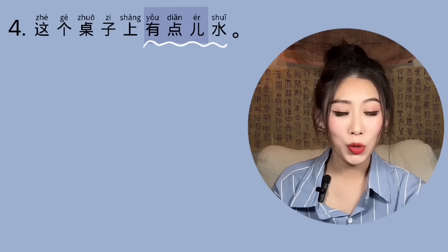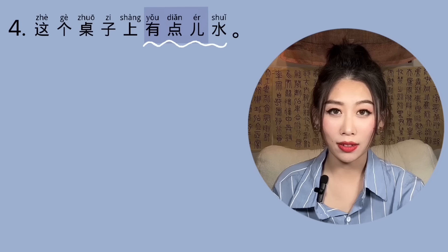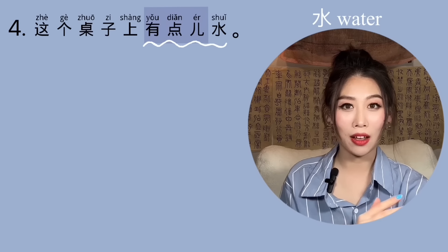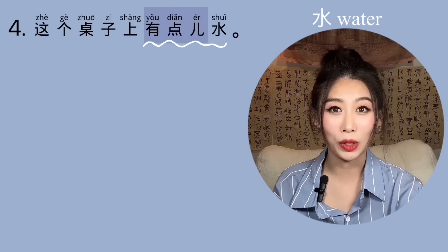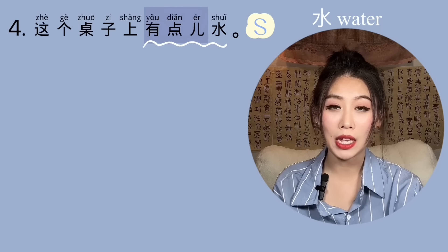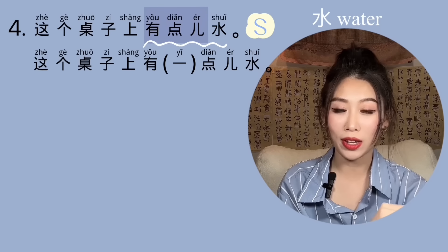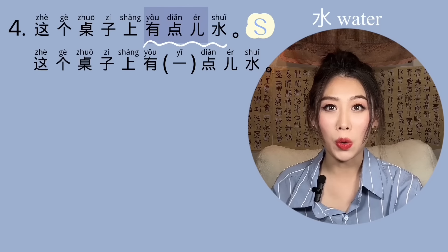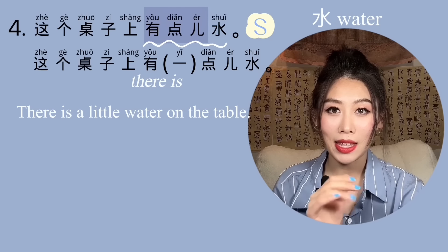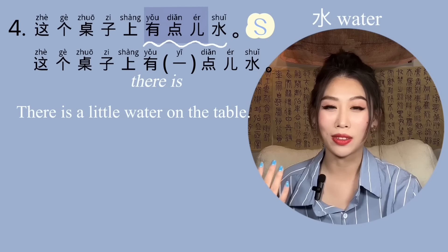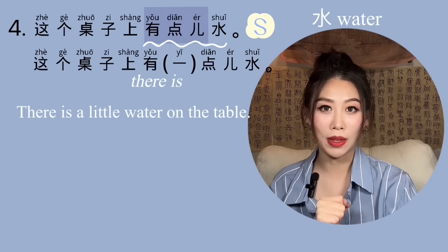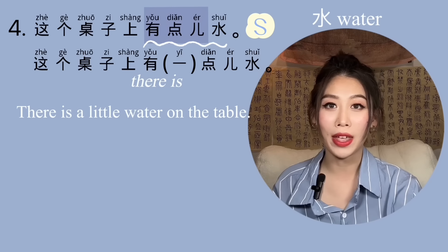Number four: 这个桌子上有点儿水。水 is water — it's a noun. Didn't we say 一点儿 with a noun? How come here it's 有点儿水? Well, this is spoken language. The complete version would be 这个桌子上有一点儿水 — a little water. 有 here means 'there is,' so 'there is a little water here.' But 一 is optional, especially in spoken language where we omit what we can. So 有点儿水 actually means 有一点儿水 — there is a little water.